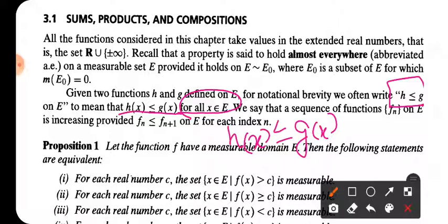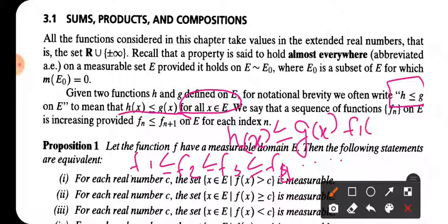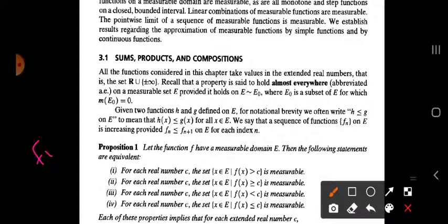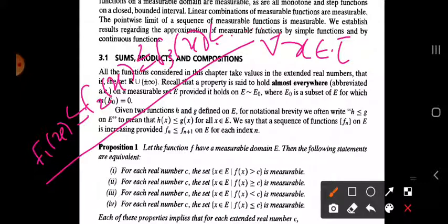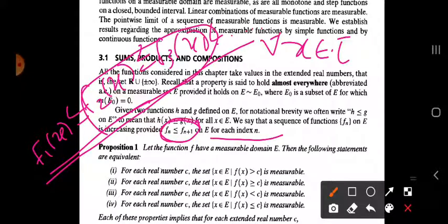If we consider this function increasing — ascending order — we consider this sequence of functions increasing: f1, f2, f3, f4, etc. If we consider this sequence increasing, the meaning is: f1(x) ≤ f2(x) ≤ f3(x) ≤ ... for every x in E. We just need to assume f_n ≤ f_{n+1} for all indices n = 1, 2, 3, ...